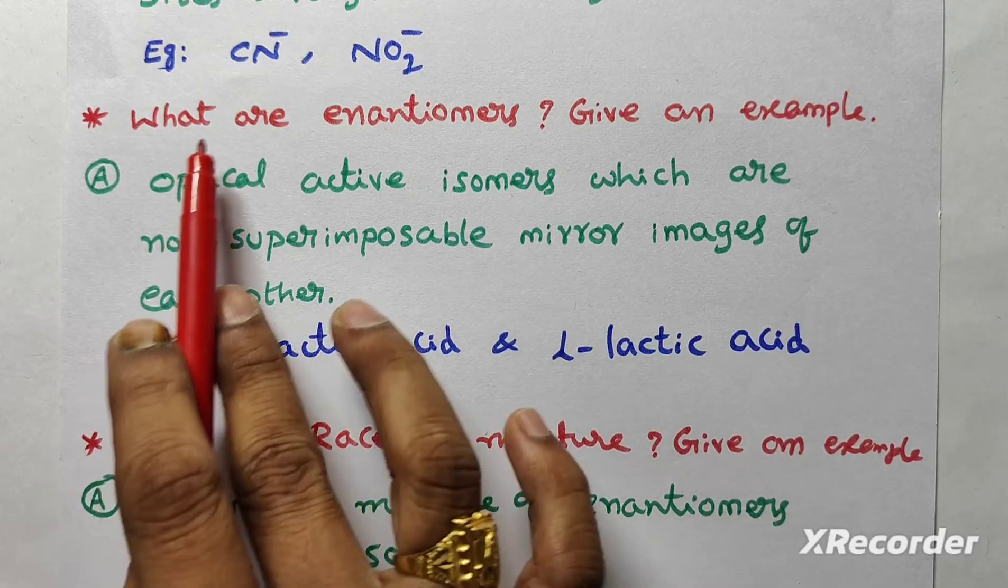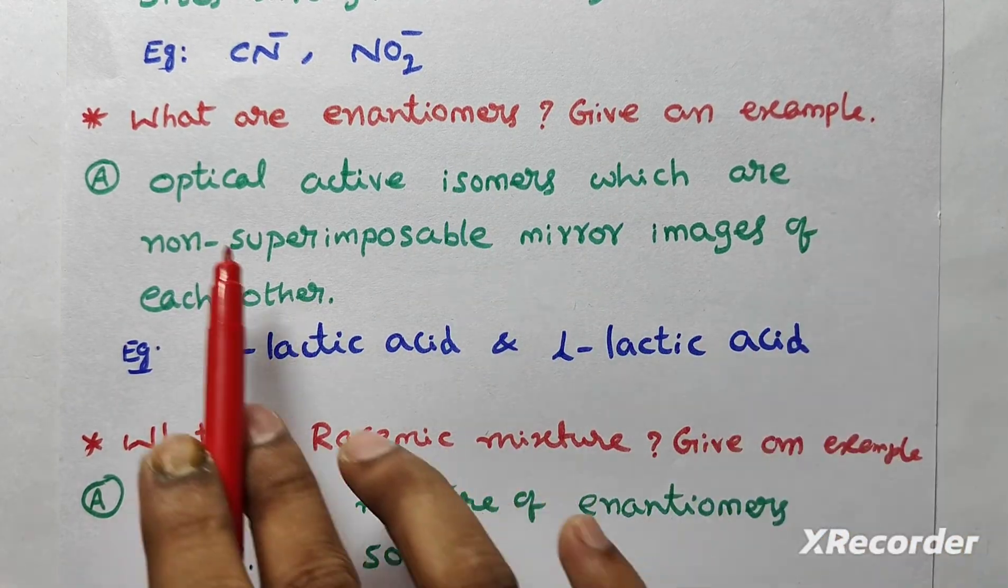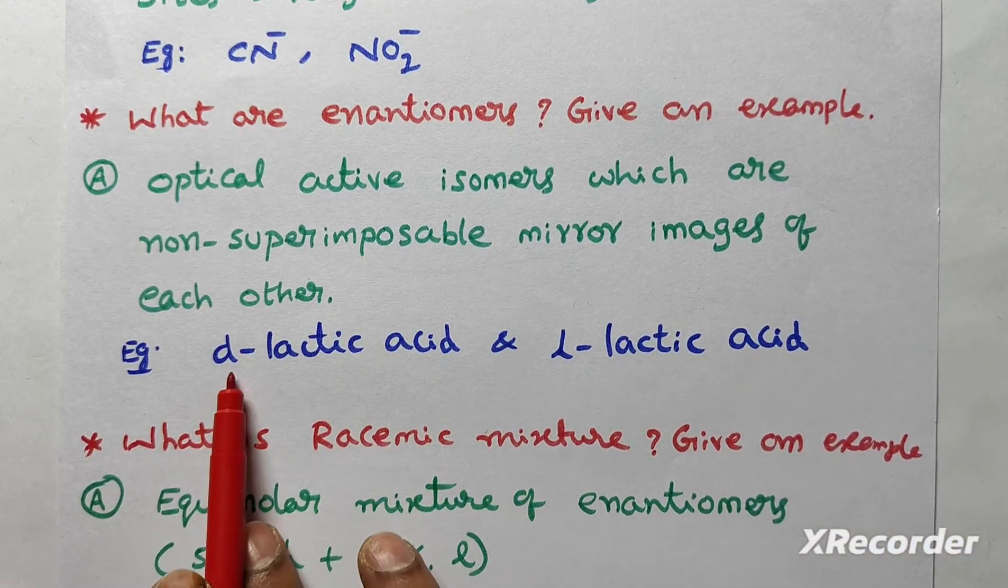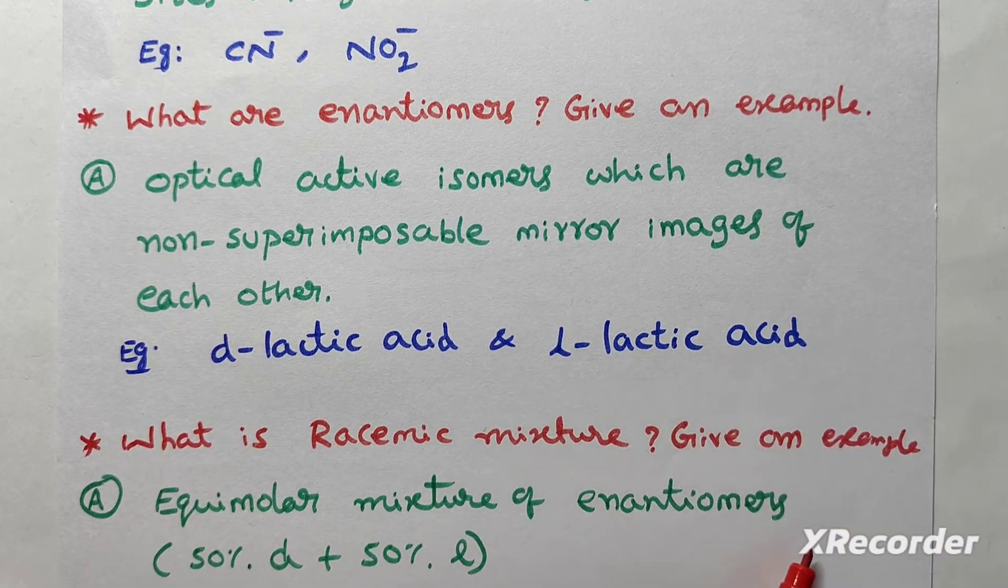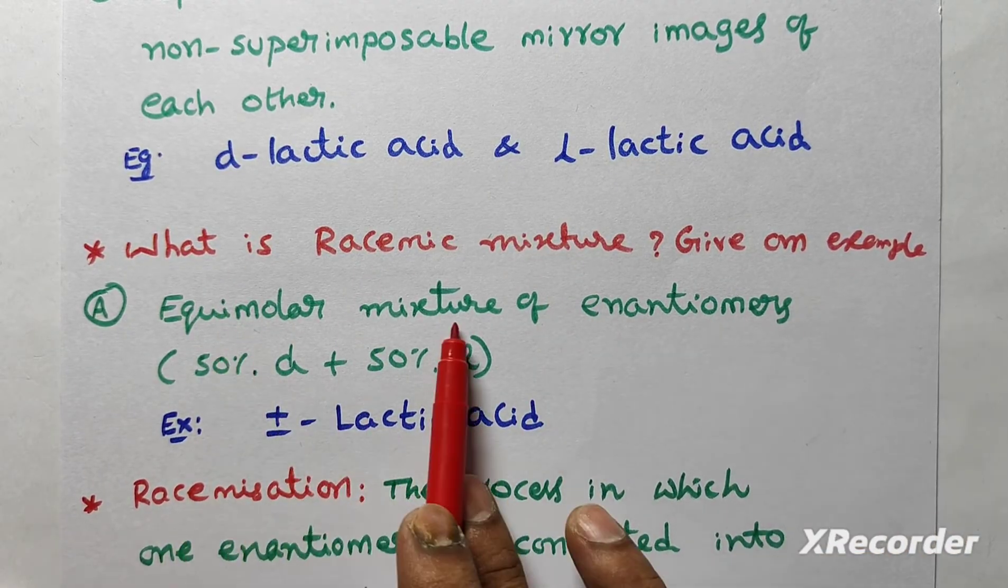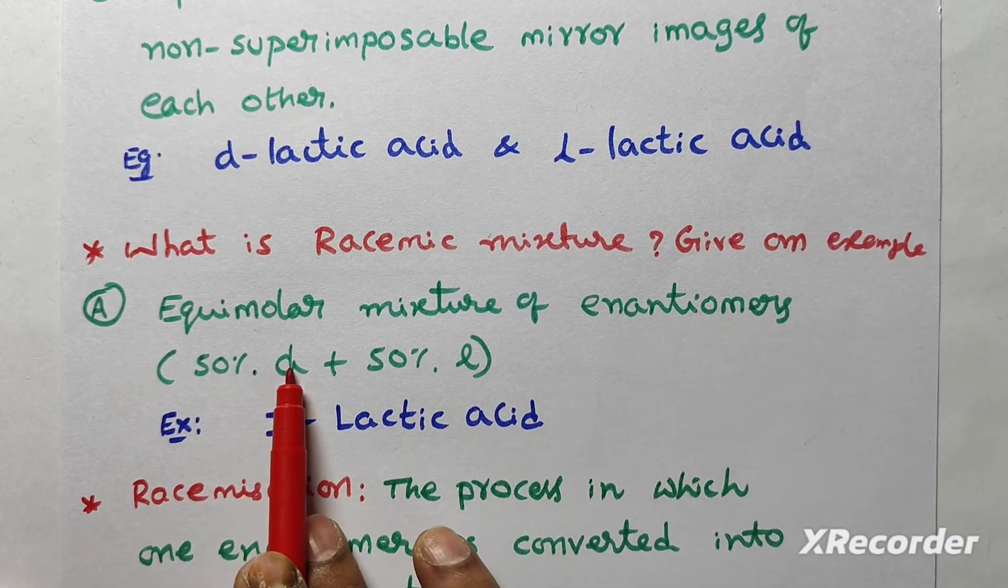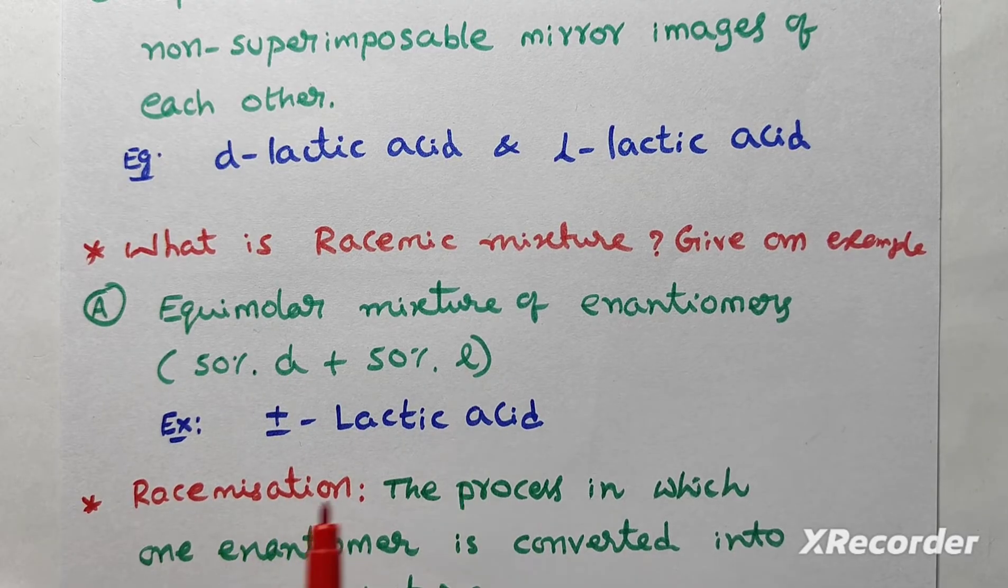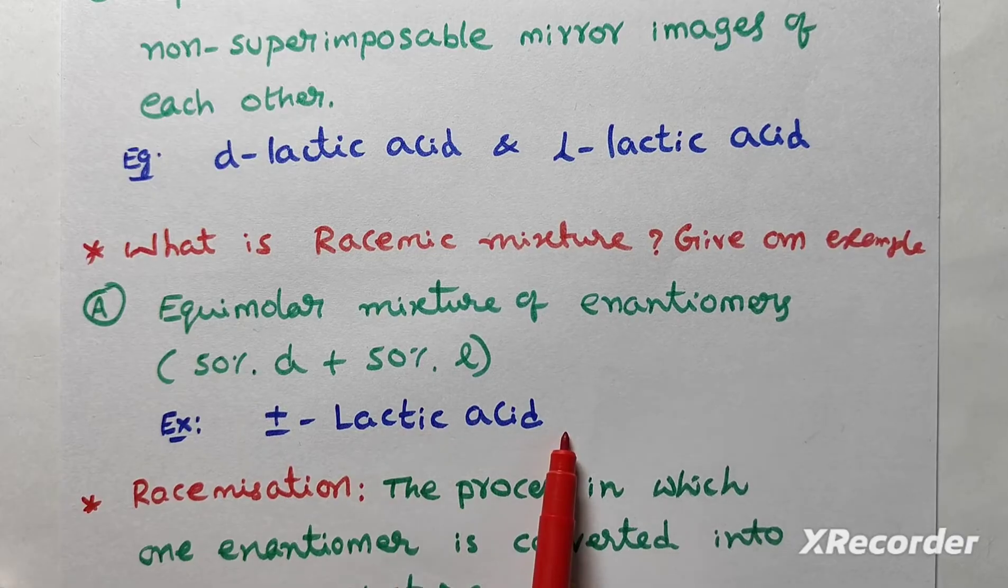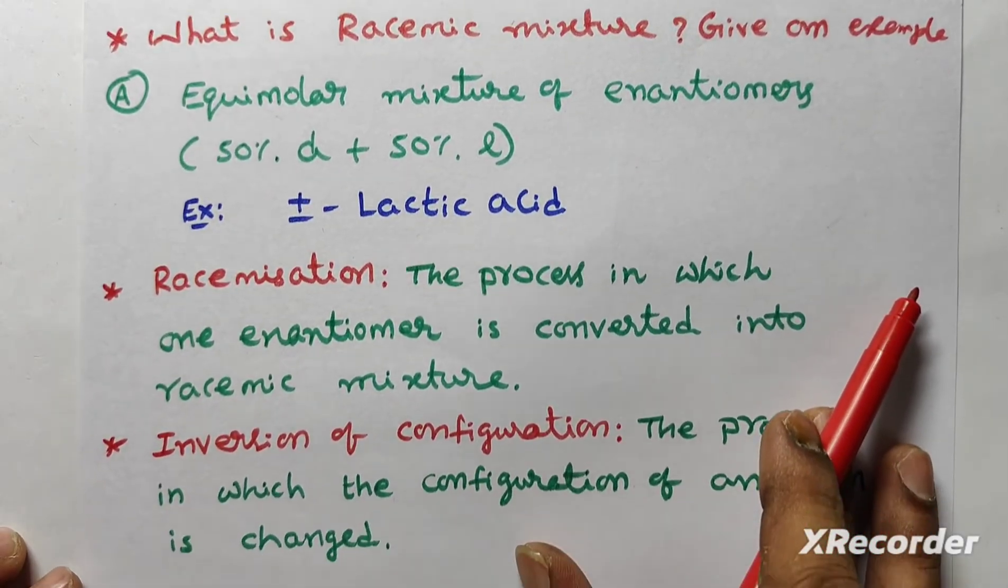What are enantiomers? Give an example. Optical active isomers which are non-superimposable mirror images of each other. Example, D-lactic acid, L-lactic acid. What is racemic mixture? Give an example. Equimolar mixture of enantiomers. 50% dextro, 50% levo. Example, dextro and levo 50-50% lactic acid. Plus or minus.